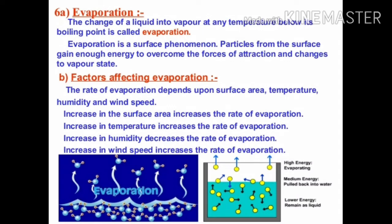The third factor is humidity. In the rainy season, our clothes dry much slower compared to summer. Why is this happening? Because already a lot of humidity is present in our atmosphere. Because of that, evaporation gets slower and cannot occur as much as it does in summer. The last factor is wind speed. Whenever wind speed increases, evaporation will increase. This happens because when there is higher and hotter wind speed, the surrounding temperature increases due to direct sunlight and the warm wind. Because of that, evaporation gets faster.